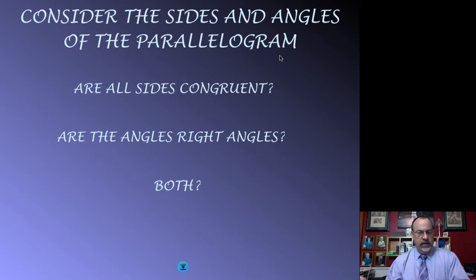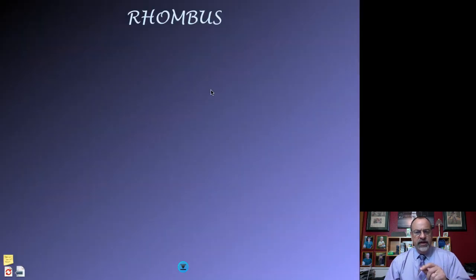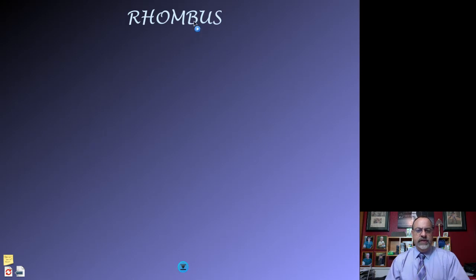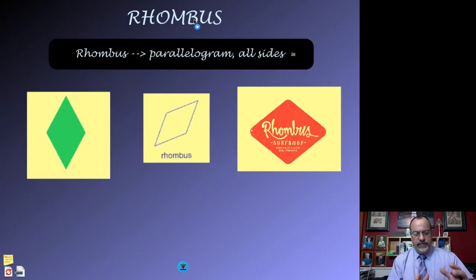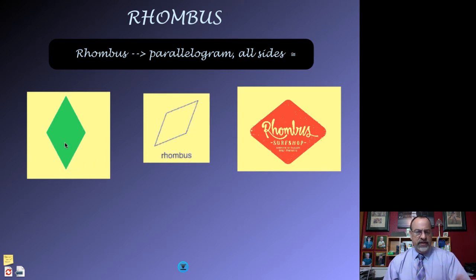Once we know that both pairs of opposite sides are parallel, we ask: are all the sides equal in length? If the answer to that question is yes, then we can classify it as a rhombus. A rhombus is a parallelogram — it has two pairs of opposite sides that are parallel — but in addition to that, it also has all four sides equal in length. That's the more specific name for that quadrilateral.